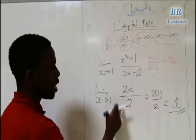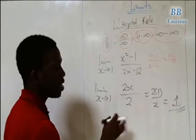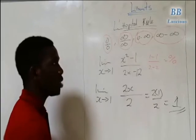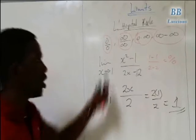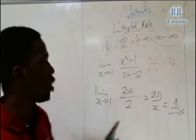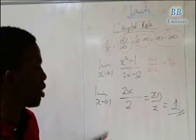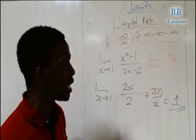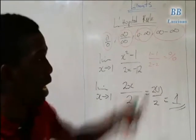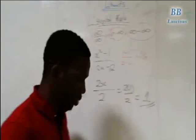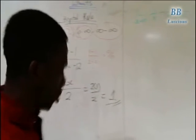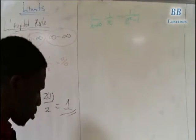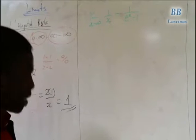Note that if you find the derivative the first time and you still get 0 over 0, infinity over infinity, or any of those four indeterminate forms, you keep finding the derivative until you can get a definite answer. I will solve such an example now.